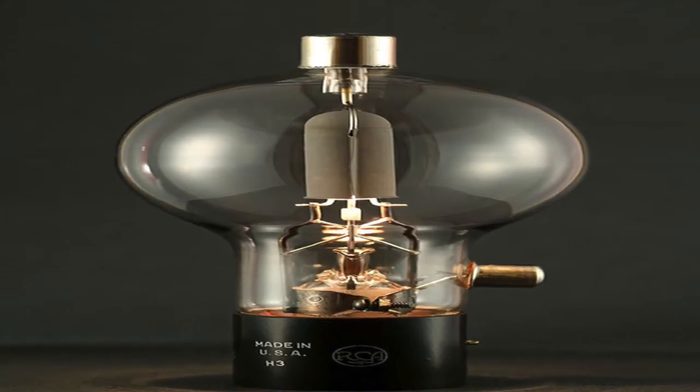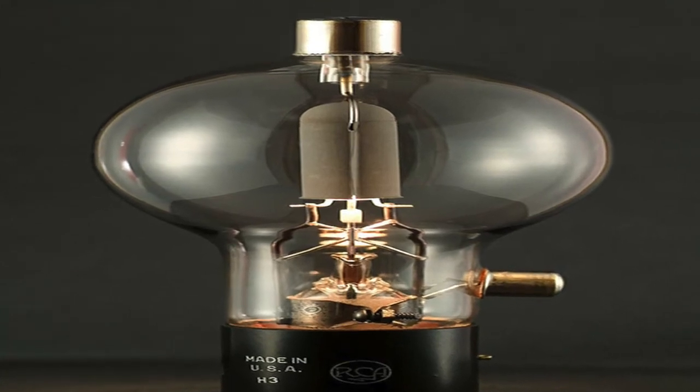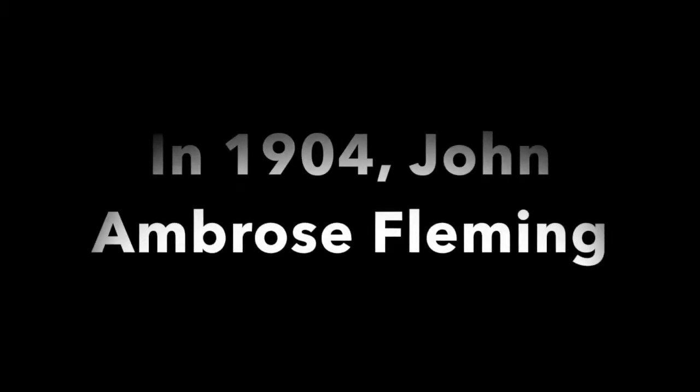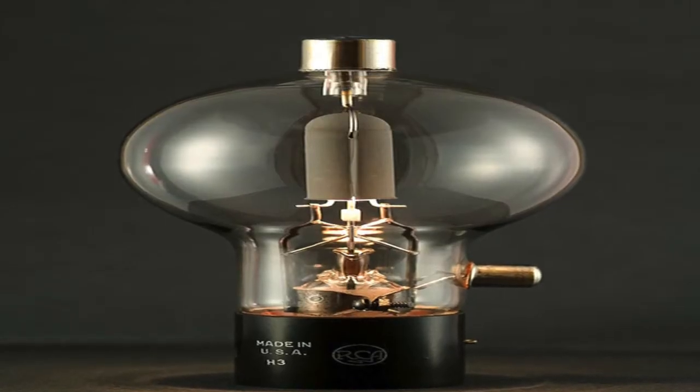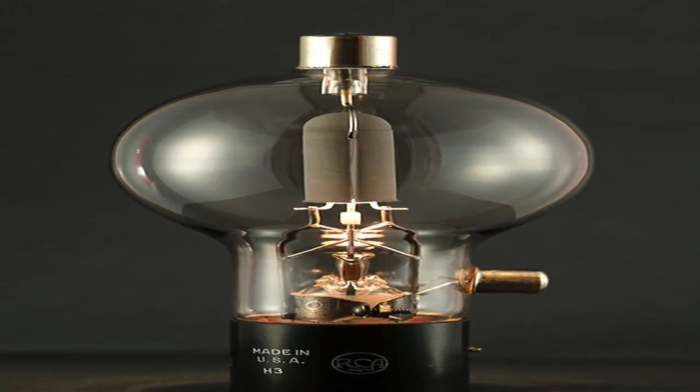During the period 1904 to 1947, the vacuum tube was the electronic device of interest in development. In 1904, J.A. Fleming introduced the vacuum tube diode, a two-electrode vacuum tube as shown in this figure.